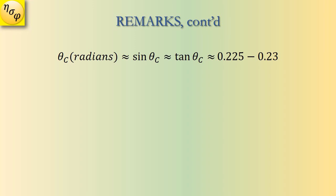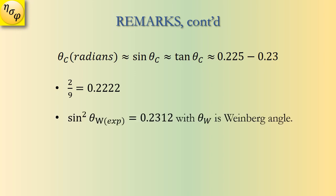The second remark: the value of theta-c in radians — or its sine or tangent — is around 0.225 to 0.23. Notably, this number is close to 2/9. Thirdly, this number is also close to the weak mixing angle sin²(theta-W), where theta-W is another important angle in physics called the Weinberg angle. Additionally, if we set up the equation e^(−2πr/R) = 1, the solution is a number close to this value. Physicists recognize that this equation has physical meaning: the exponential of a negative number represents decay, and 2πr is the circumference of a circle with radius r.